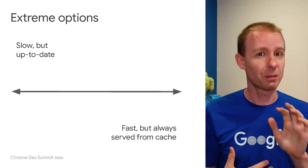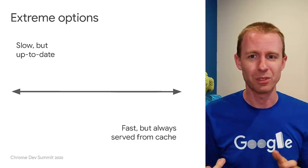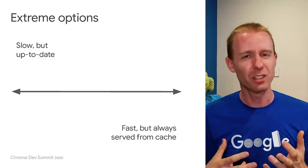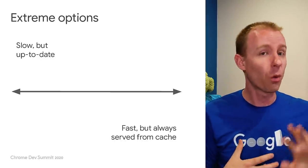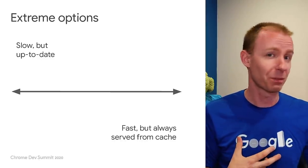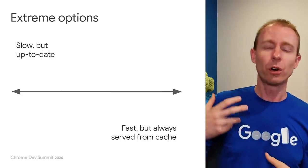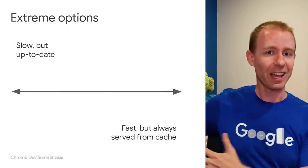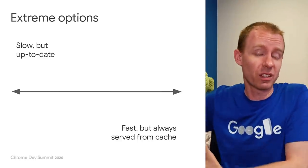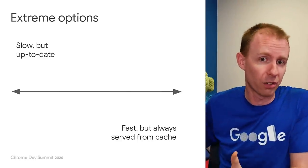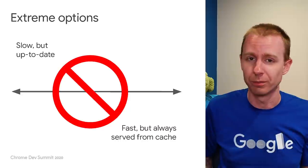I'd like to dispel the myth that the web sits at one of two extremes. You could go to the network for every resource and always ensure a site is up to date, albeit slowly. Or you can put everything in a cache and be fast, but maybe out of date. But this isn't really the case — you can be in the middle.